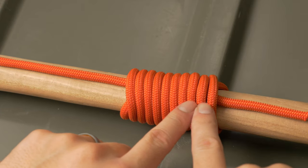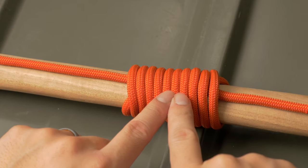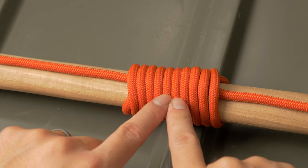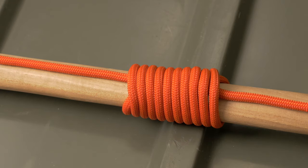Once the junction is moved more or less towards the center of the whipping, you can go ahead and cut the ends and melt them to finish them off. And there you have it folks, now you know how to do a common whipping.